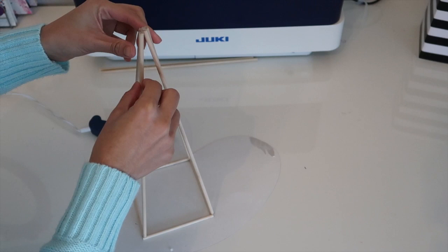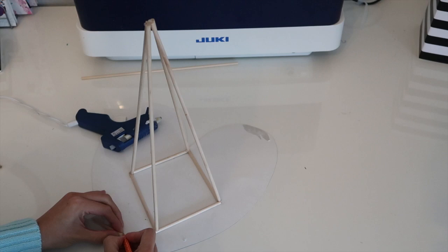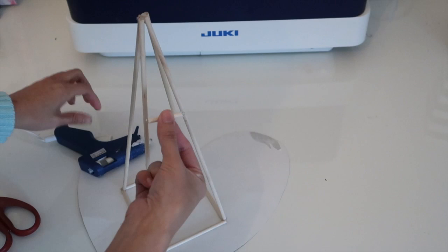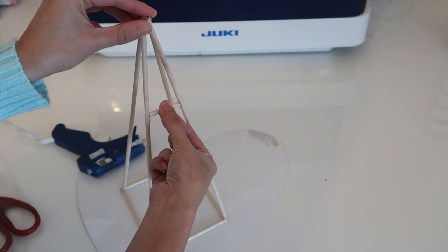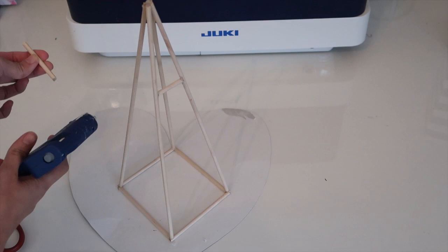Now it's time to cut some bars so you can hang the sunglasses or eyeglasses. I just eyeball it, cut it, and glue it right between the dowels. You'll need four bars, and placing them is totally up to you. You can place them all at the same height or stagger them just like I did here to add interest.